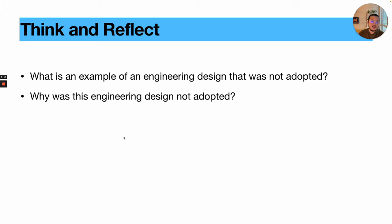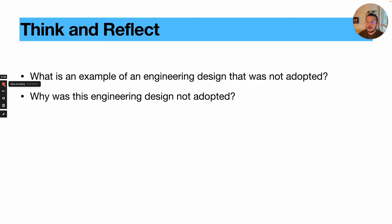To end this part and before we start Part 3, think about an example of an engineering design that was not adopted — we all know some examples. Then ask yourself: why was this engineering design not adopted? That question of why is very educational and instructive for us as designers, because if we know why something didn't work, we can avoid it. That's something we really want you to do — avoid what doesn't work. I'll see you soon in Part 3.